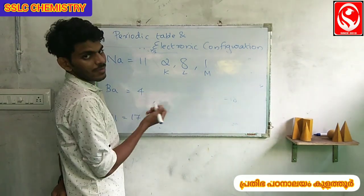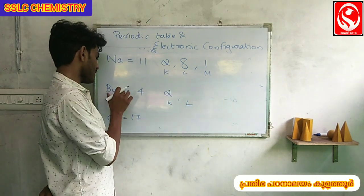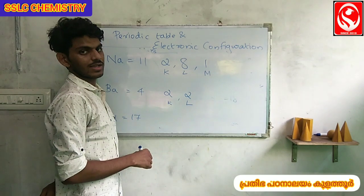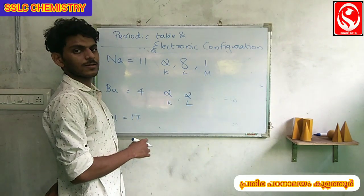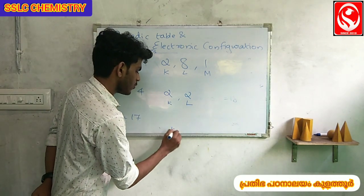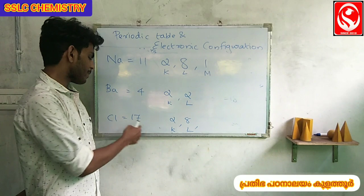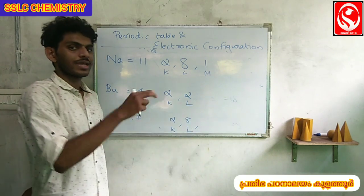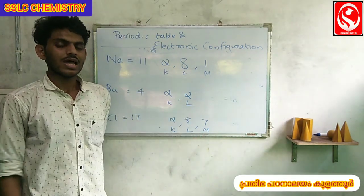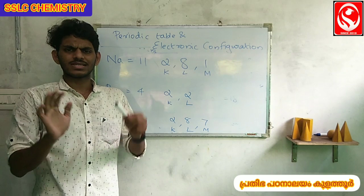Now we have barium. K shell has 2 electrons, L shell has 8 electrons. Then we have additional electrons in the next shells. The electronic configuration continues shell by shell. This is the core concept of electronic configuration — we choose the arrangement shell by shell.